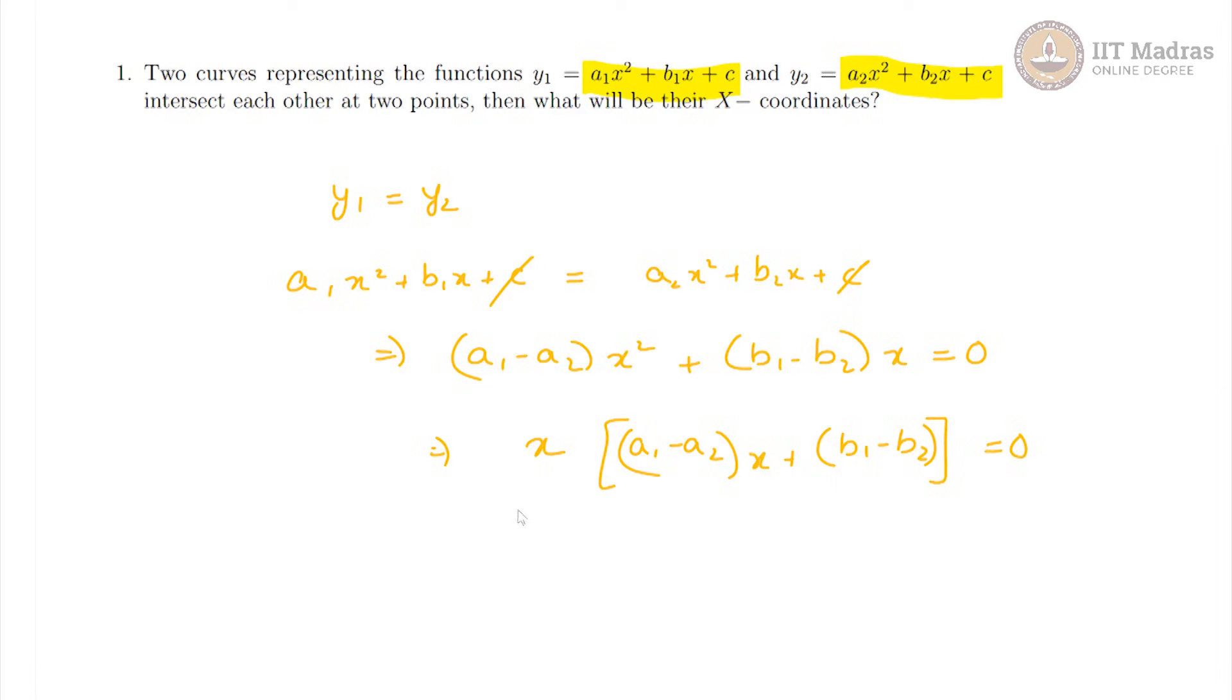So, this corresponds to two different solutions. If we took this part to be 0, then x is equal to 0 as one solution and the next one will give us x is equal to b1 minus b2 divided by minus a1 minus a2.